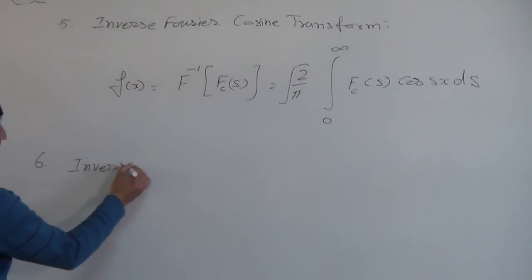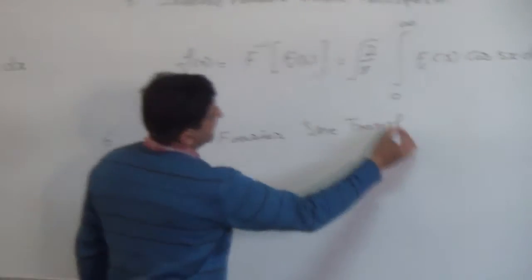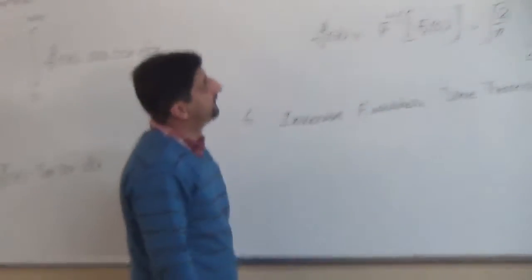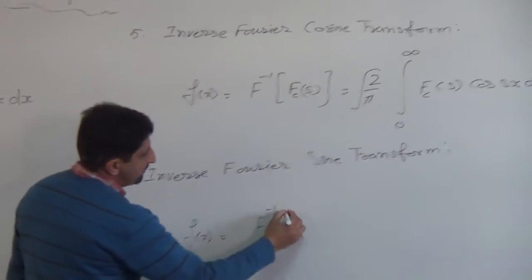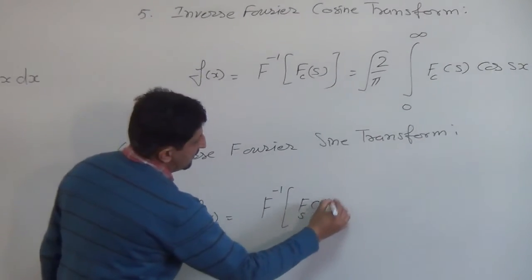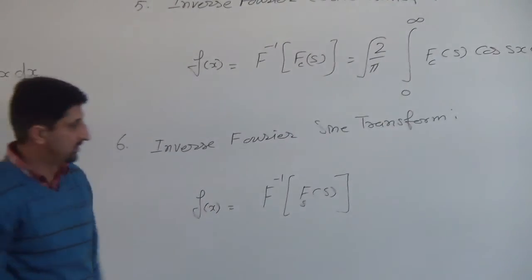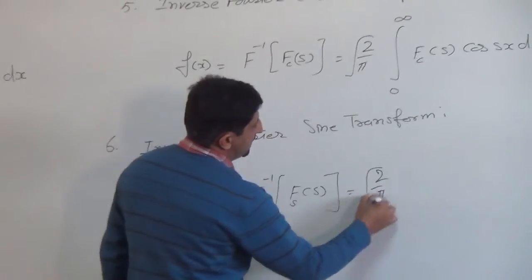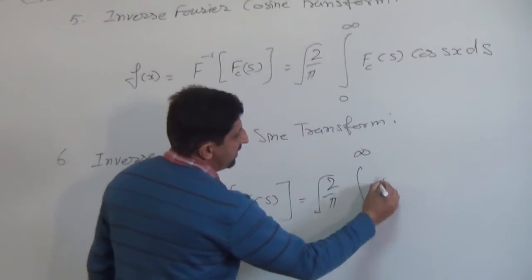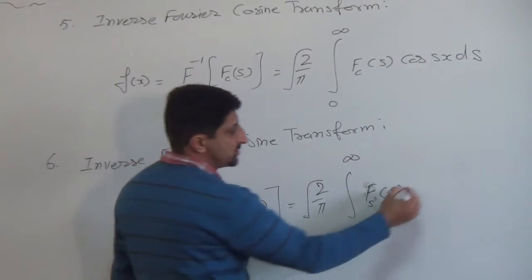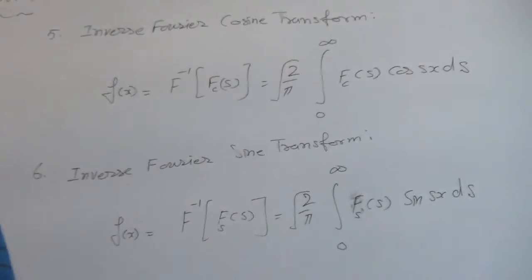We can find out inverse Fourier sine transform. f(x) equals 2 upon pi under integral 0 to infinity F_s times sine of sx dx. Here, we integrate with respect to s variable.